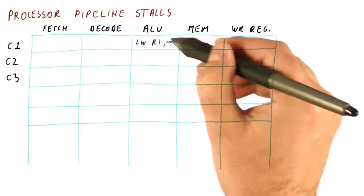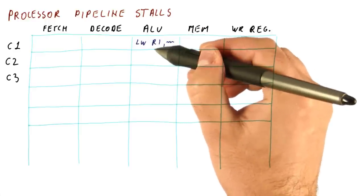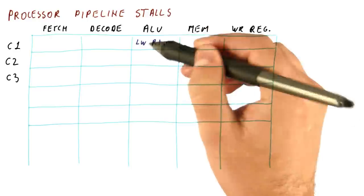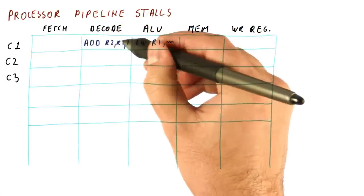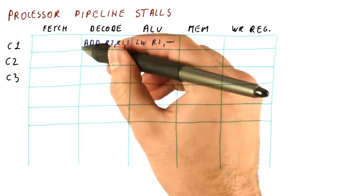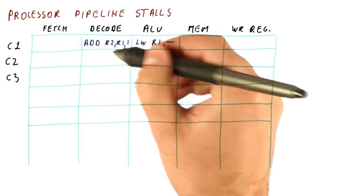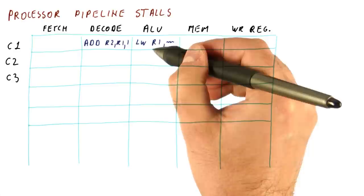While this load is in the ALU stage here, computing the address, so it hasn't accessed memory yet. Suppose we have an add instruction that needs to use the R1 and this instruction is already reading registers here so that it can compute the result in the next stage.